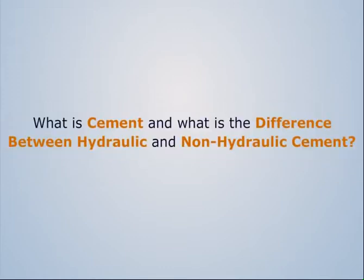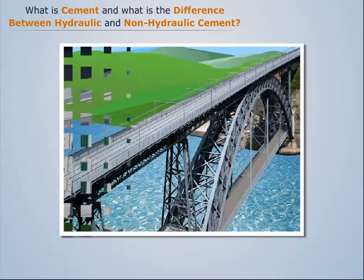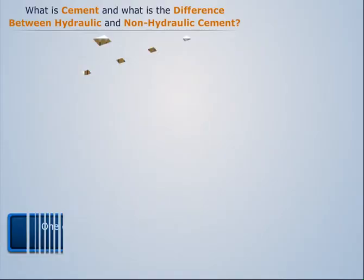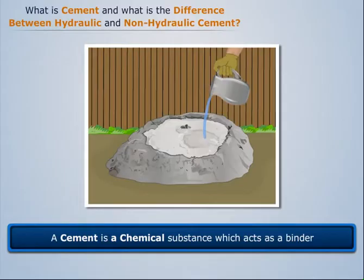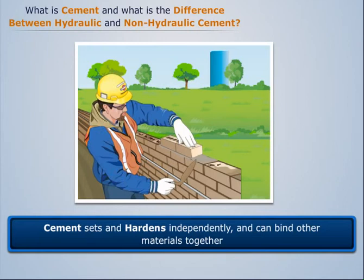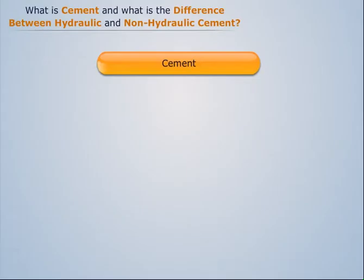What is cement and what is the difference between hydraulic and non-hydraulic cement? In our daily life, we see various buildings, bridges, towers, etc. One of the important building materials for construction of these structures is cement. A cement is a chemical substance which acts as a binder. Cement sets and hardens independently and can bind other materials together. Cement used in construction is characterized as hydraulic or non-hydraulic.